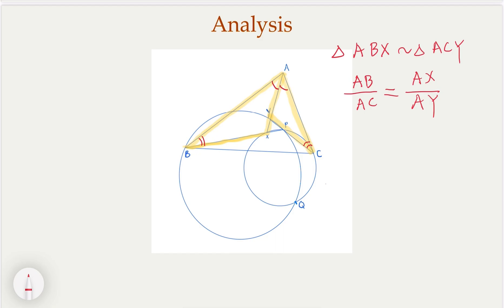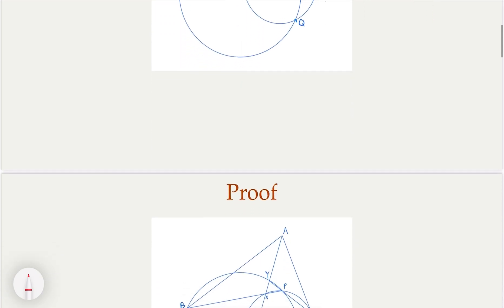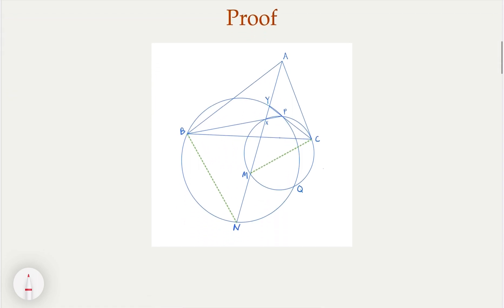Now here, we need to use the fact that the two circles are circumcircles of two triangles here. One is BPY, one is XPC. So let's extend this line here. A is angle bisector, extend it all the way, and cut through two circles at either M and N. Now we're gonna look at two big triangles, claim that they are similar.